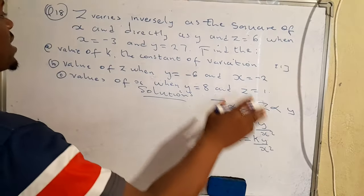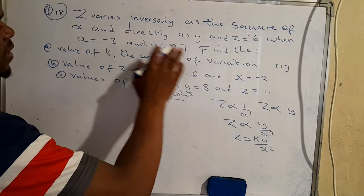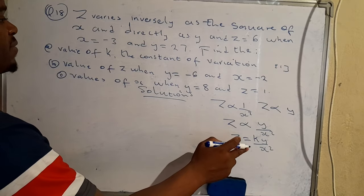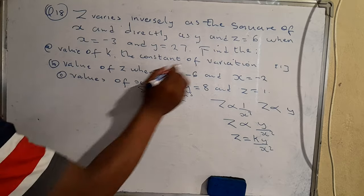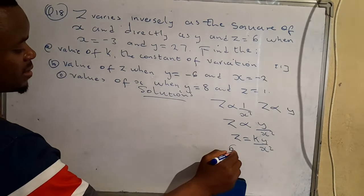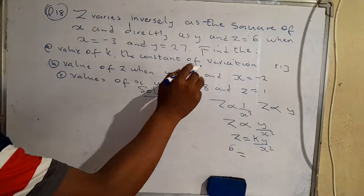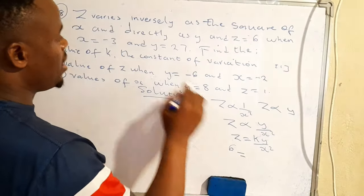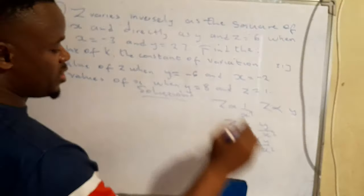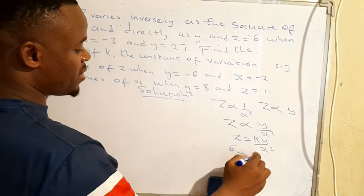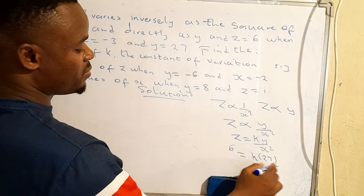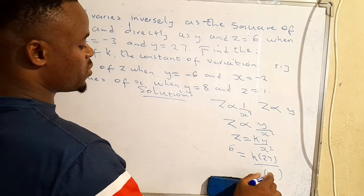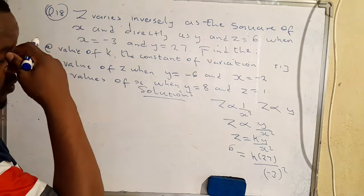Now let's read on and plug in the values. We have z = 6, so we write 6 = k·(27)/x². x is negative 3, and y is 27, so where there is y we write 27 and where there is x we substitute the value and square it.